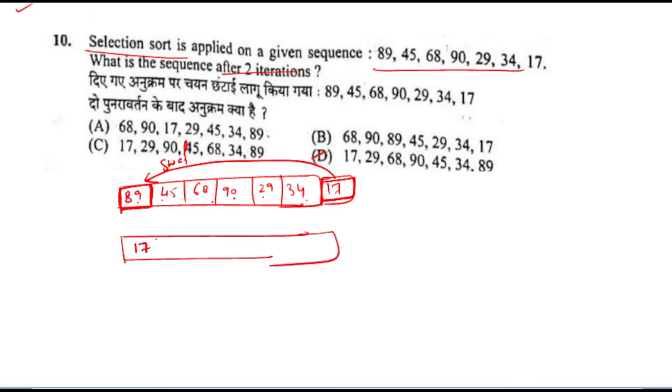17, 45, 68, 90, 29, 34, 89. Now the first position has the smallest element. We move to the next element. This was your first iteration, and this is the second iteration.